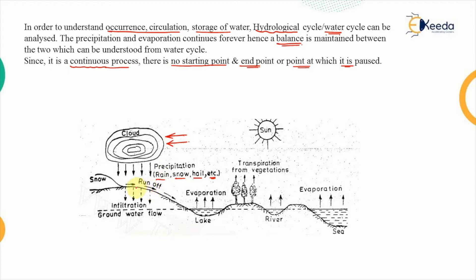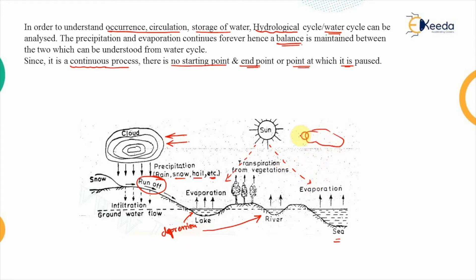Once precipitation happens, the water runs off under the effect of gravity. If there are certain depressions, water is stored in them, forming lakes. The remaining water runs off further, filling another depression if present, and the rest joins the sea. The water exposed to sunlight continuously evaporates, forming clouds again. These clouds move over the land under the effect of wind and get precipitated again.